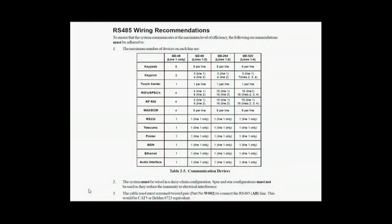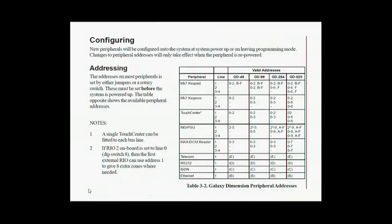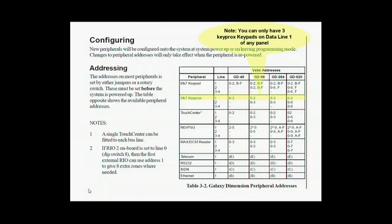In the manual it will list the communication devices. At the top you have the panel variants, and down the left hand column all of the different peripherals. This diagram will indicate how many modules you can have per dataline and the valid addresses per module per dataline for the different panel variants. Please note you can only ever have three keyprox keypads on dataline 1 of the dimension panel. Also you cannot set a keyprox address the same as a max 3 address on the dataline.